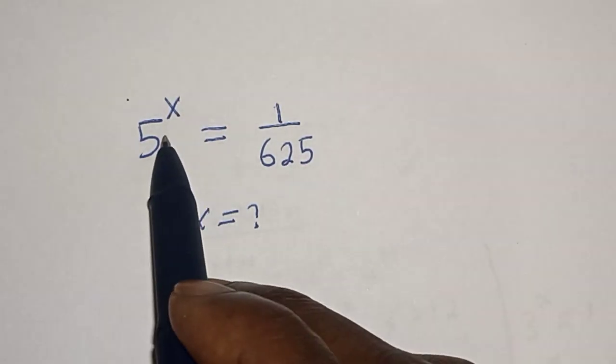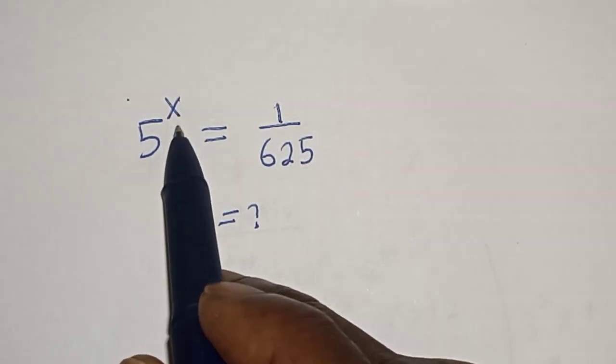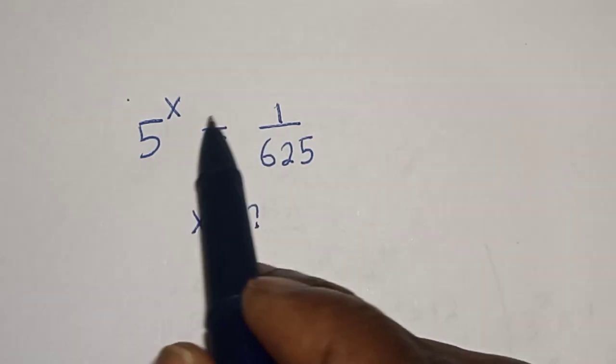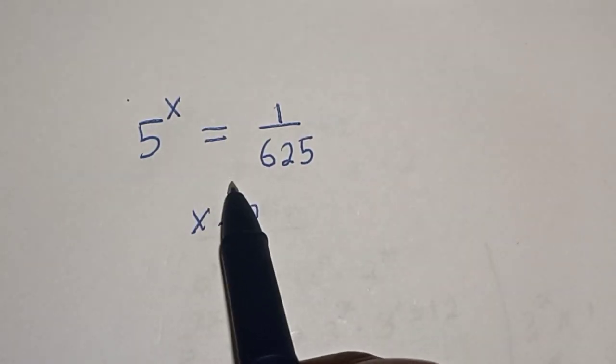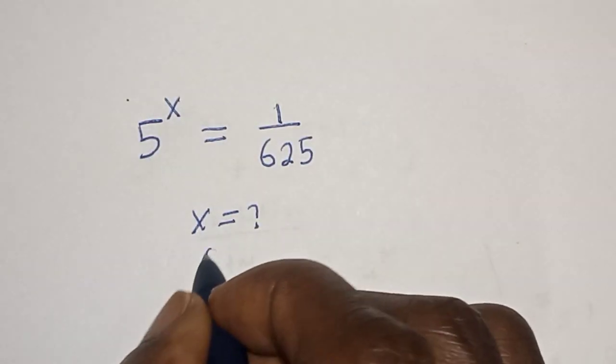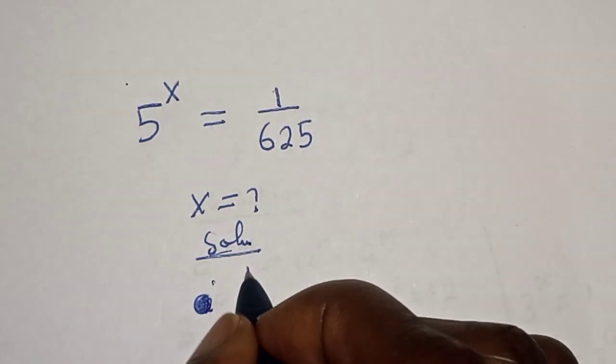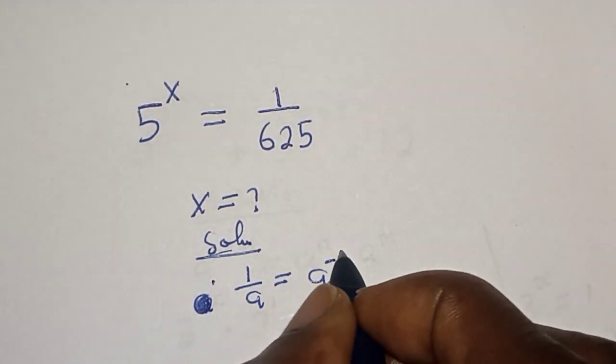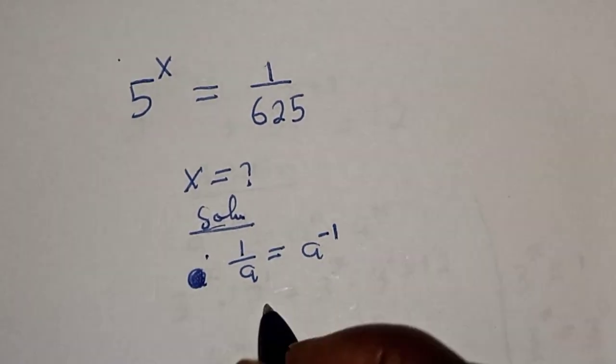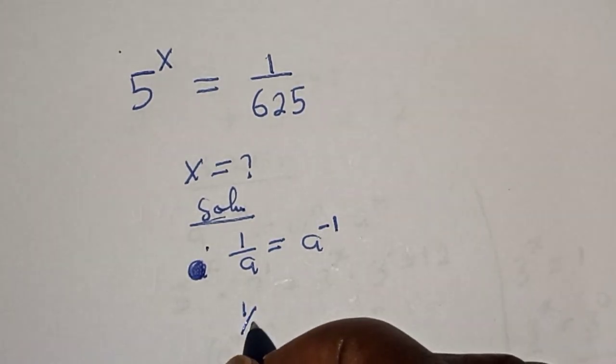Hello, welcome to Magic. In this class we want to find the value of x from this nice exponential equation. But before we proceed, like, share, comment and subscribe. Solution: Remember this rule that if you have 1 over a, this is equal to a raised to the power minus 1. Then if you have 1 over q, this is equal to q raised to power minus 1.